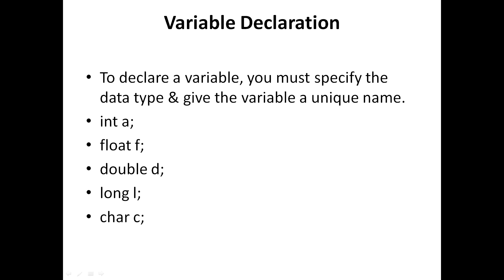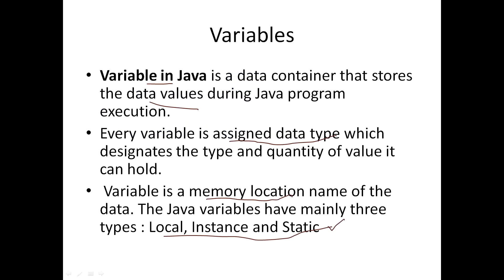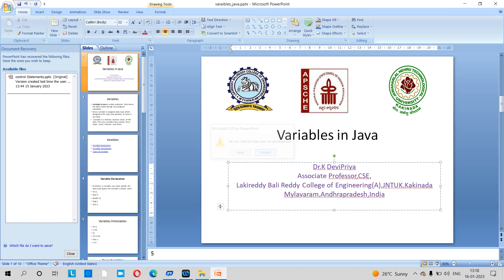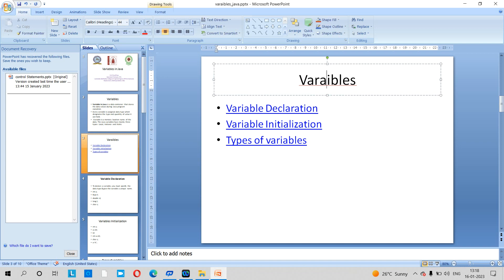When talking about variables, first we discuss the three types. The steps involved are: first, variable declaration; second, variable initialization; and third, identifying the type of variable.